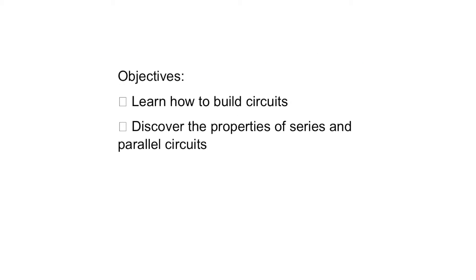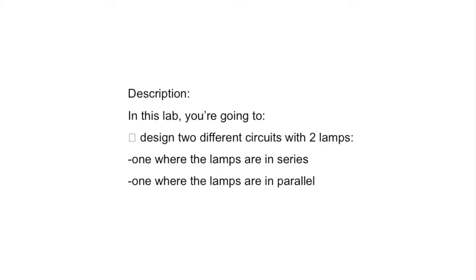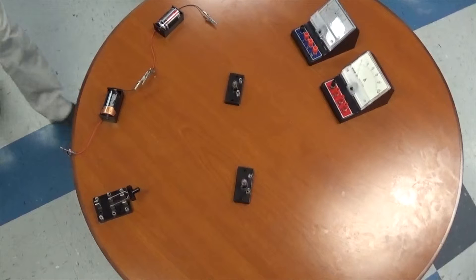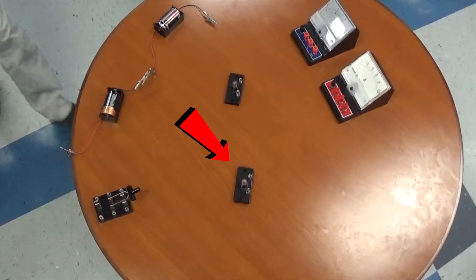Now let's return back to the objectives of this lab: one, learn how to build circuits; two, discover the properties of series and parallel circuits. In this lab, you are going to design two different circuits with two lamps — one where the lamps are in series and one where the lamps are in parallel. You will need a battery source, two light sources acting as resistors, and a switch.